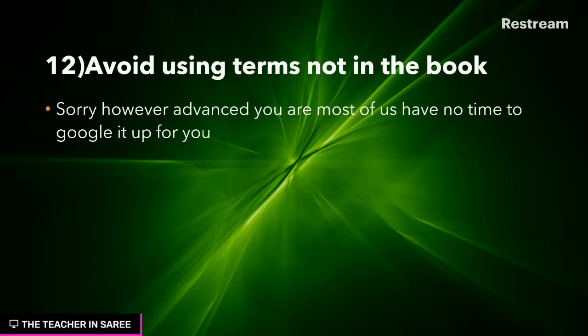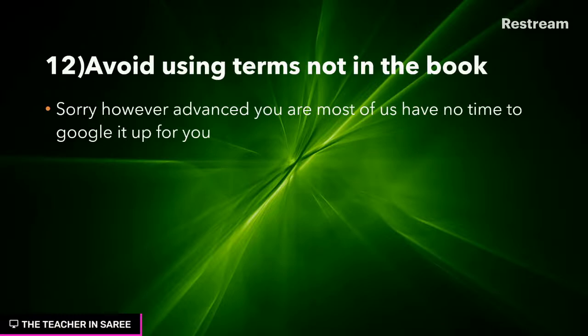When your advanced facts are not in the marking scheme, the examiner cannot award you marks — and we don't have time to Google it up for you. We just don't have the energy. Like I said, I have no feelings for you — you are just a number. Try to keep your answers within the limit of what you learned in your book and your syllabus. Don't blame us for not awarding marks because it's not in the marking scheme. Keep your answers simple, within the limits of what you have learned and are supposed to know.